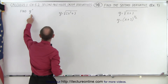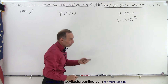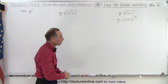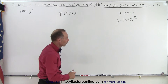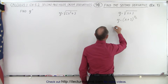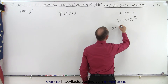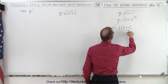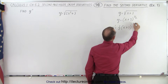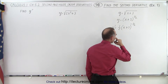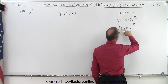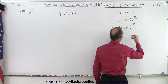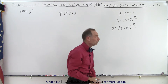Since we're looking for y double prime, that means we're looking for the second derivative with respect to the variable the function is related to — in this case, with respect to x. So y prime, the first derivative, is equal to: put the exponent in front — 1 half times x plus 3 to the exponent minus 1, which is minus 1 half, times the derivative of what's inside, which is 1. The derivative of x plus 3 is simply 1.